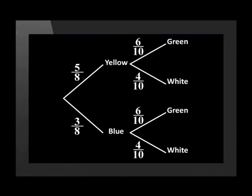Let's do this together. Firstly, we have yellow, then green. Secondly, it's yellow, then white. The third one will be blue, then green. And the fourth is blue, then white. This shows us that there are four possible outcomes.